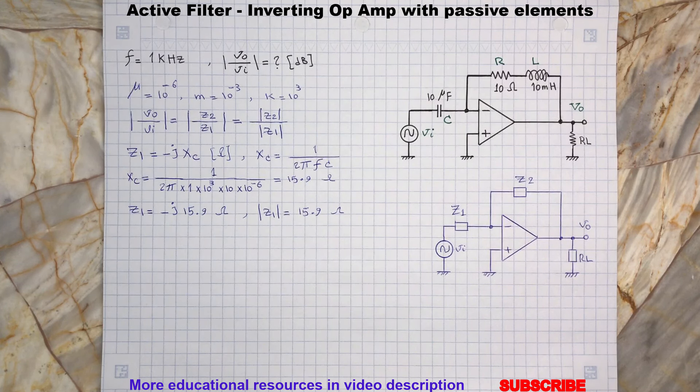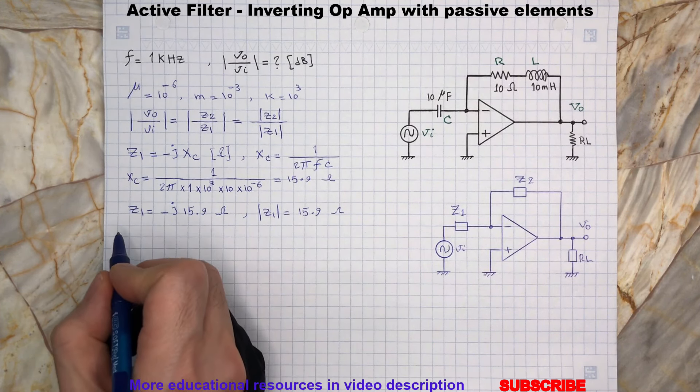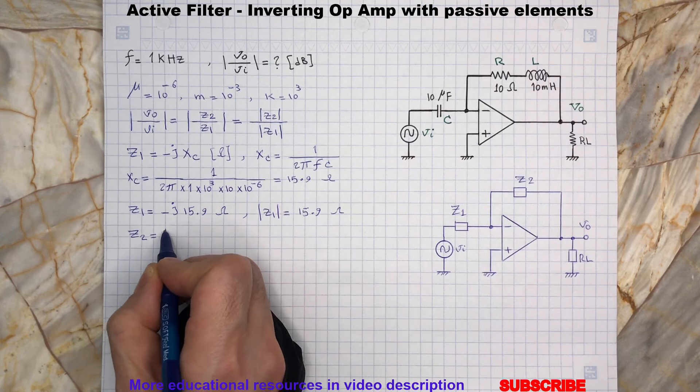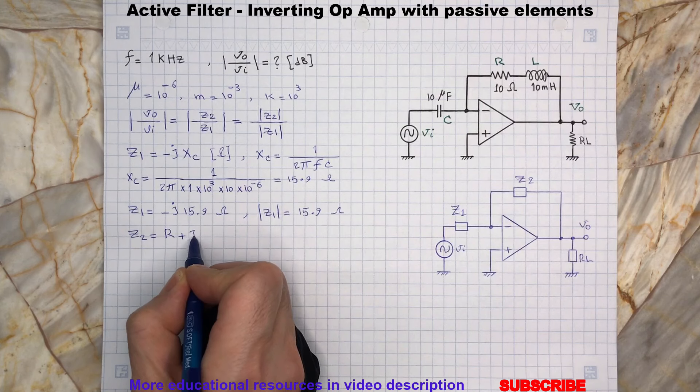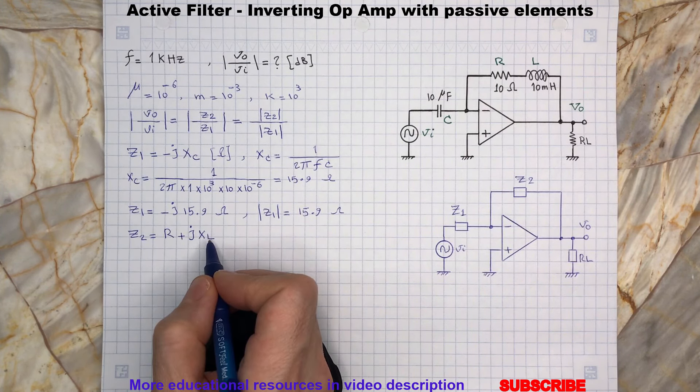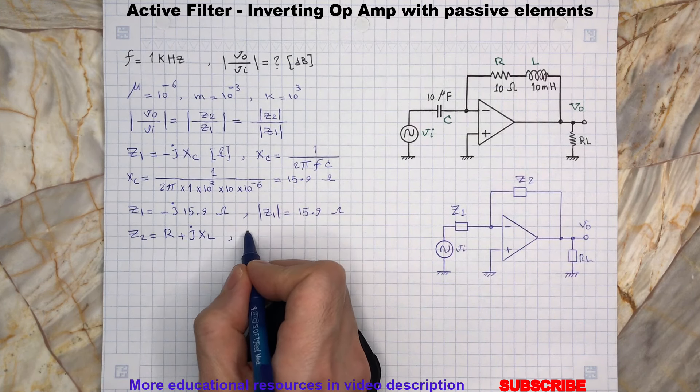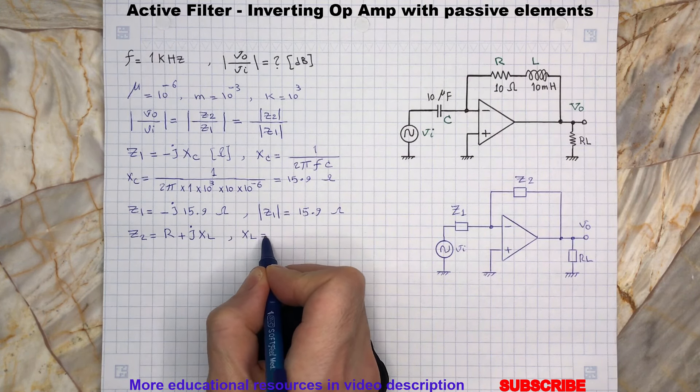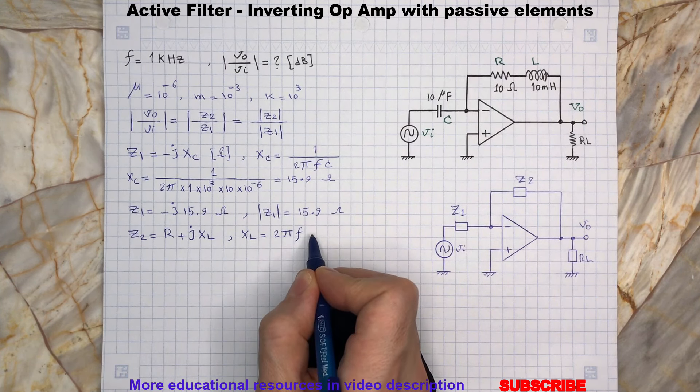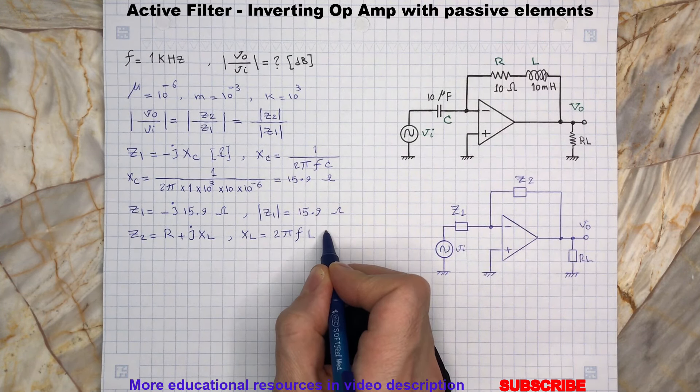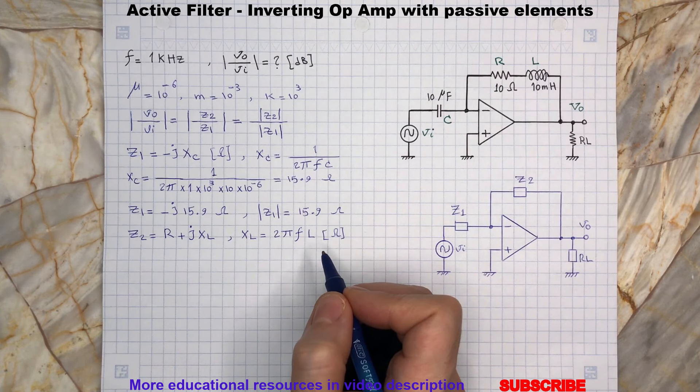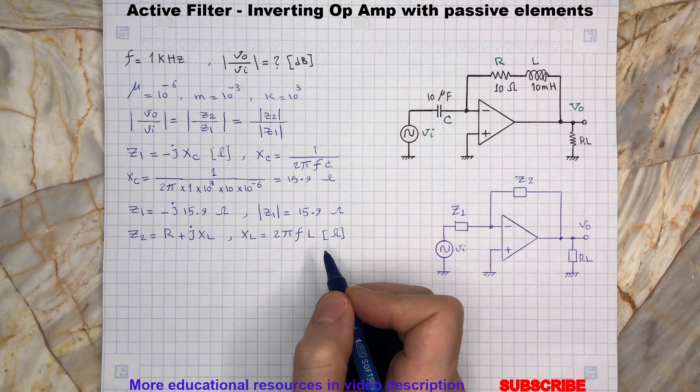For impedance Z2 we have resistor and inductor, where XL is the inductive reactance. By plugging the inductor and frequency values we get the result.